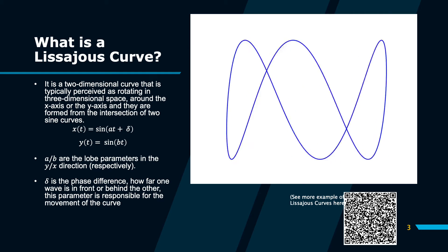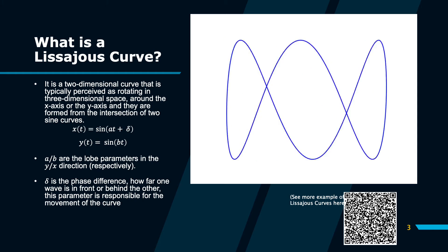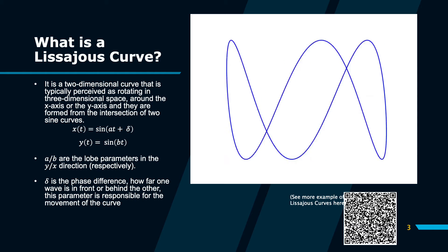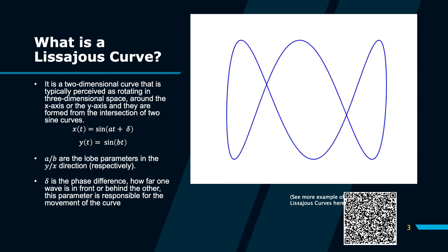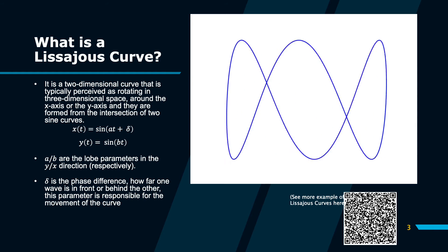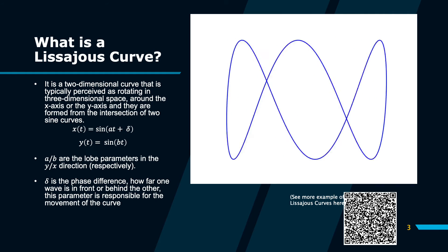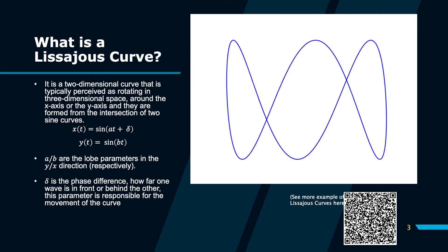If you look at the curve now, you may notice it rotating right or left, and it might spontaneously switch between the two. This is the type of behaviour that we're going to be exploring in this model.